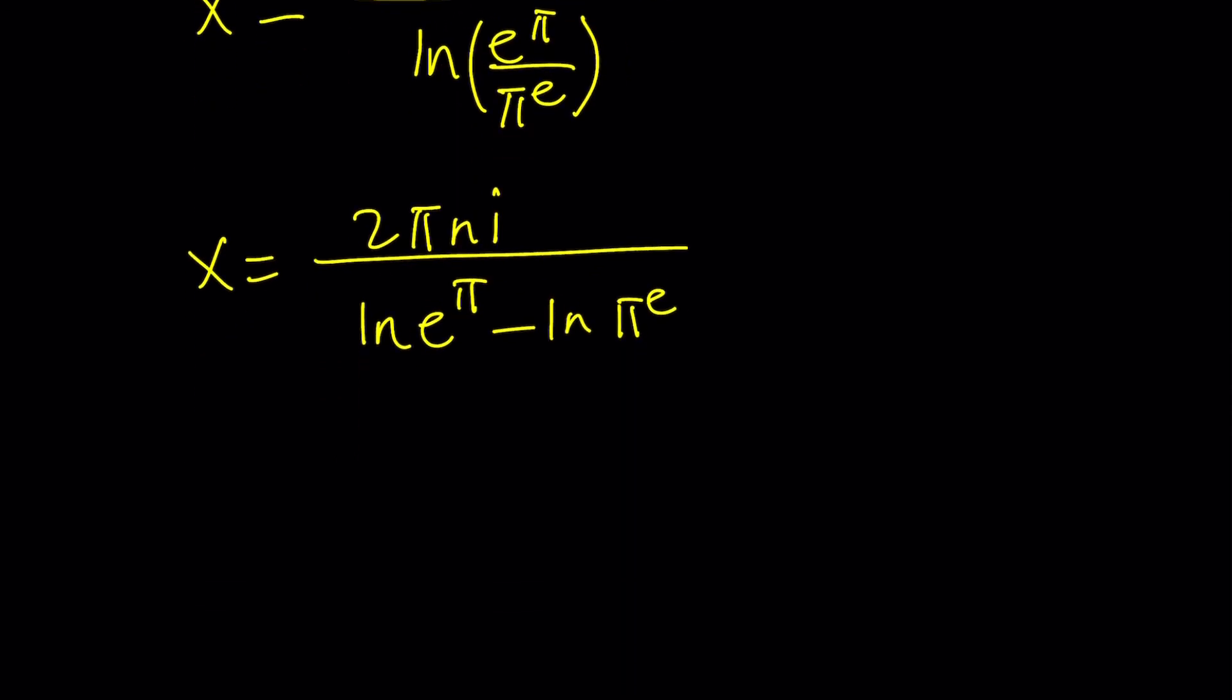So, like this. And then, moving the powers to the front, it's going to be 2 pi n i divided by pi ln e minus e ln pi. So, since n is an integer,